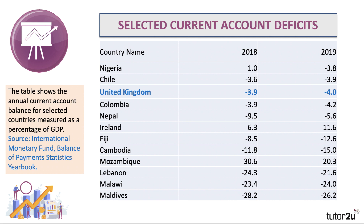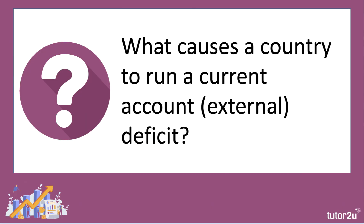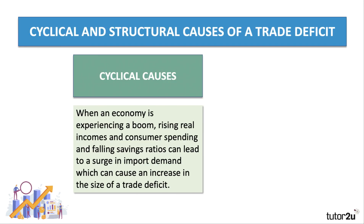Often there's quite a bit of volatility in the data on the current account. The current account is clearly the balance between lots of big numbers, so balances can go up and down over time. But when we think about what causes a country to run a current account deficit, otherwise known as an external deficit, it's really good evaluation to make a distinction between cyclical and structural causes. Cyclical versus structural is a superb way of getting high marks for evaluation, particularly on the longer questions.